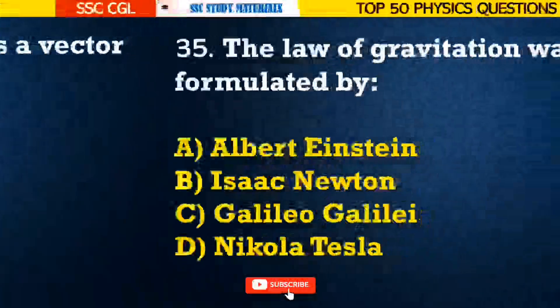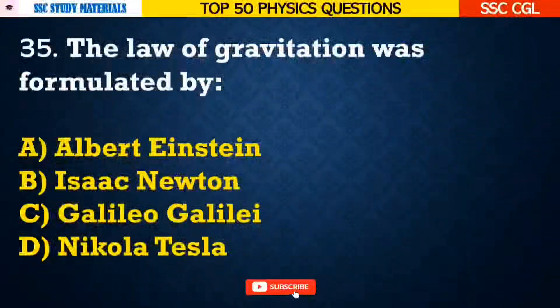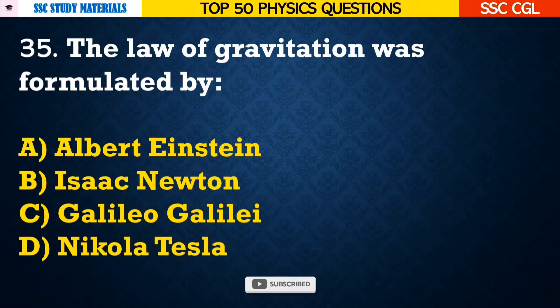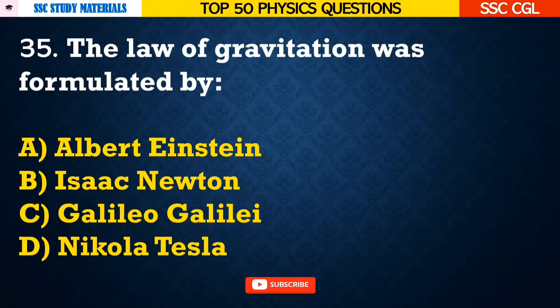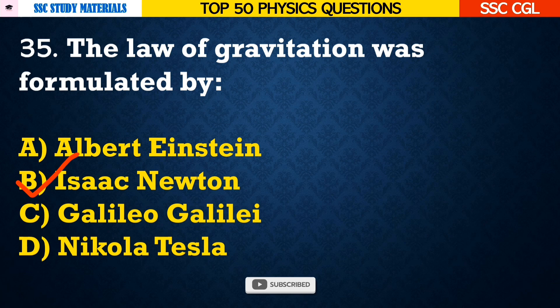Question number 35: The law of gravitation was formulated by — Answer B. It was formulated by Isaac Newton.